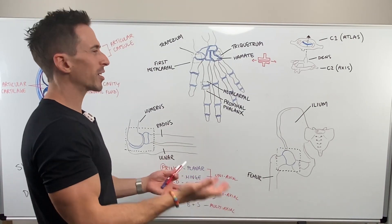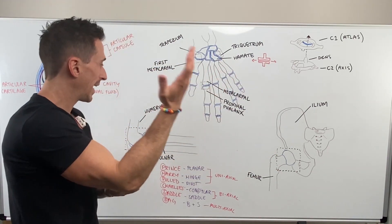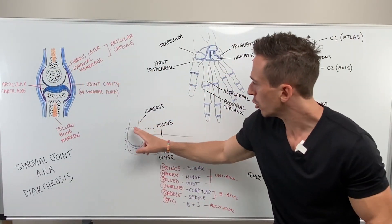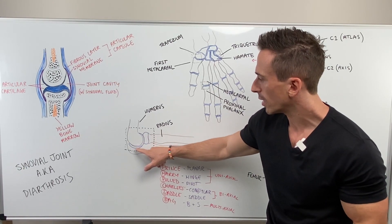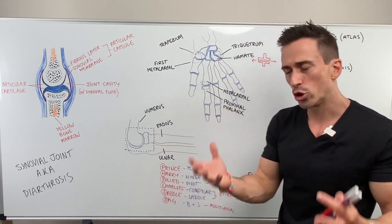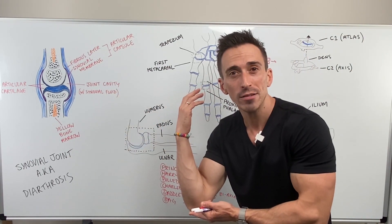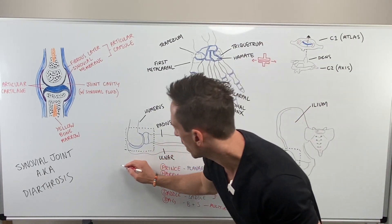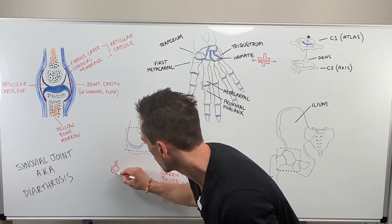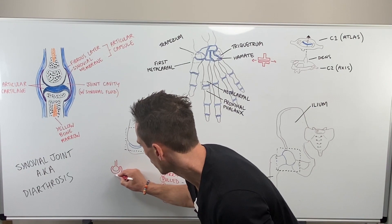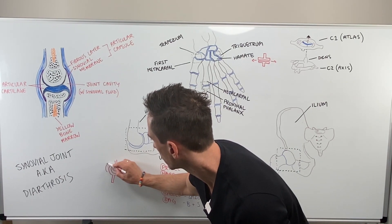Next is the hinge joint. Hinge is simple — it's like a door that opens and closes. My elbow joint is a hinge joint. I've drawn the humerus, the radius, and the ulna, and here's the elbow joint with the articulating cartilage. A hinge joint moves like the hinge of a door and only moves in one axis.